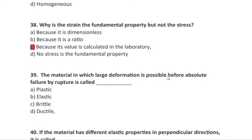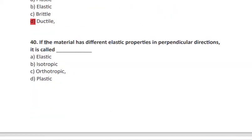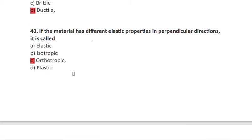Question 39: the material in which large deformation is possible before absolute failure by rupture is called a ductile material. Question 40: if a material has different elastic properties in perpendicular directions, it is called an anisotropic (orthotropic) material — unlike isotropic materials where properties are the same in all directions.